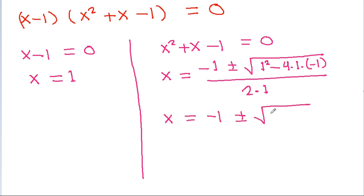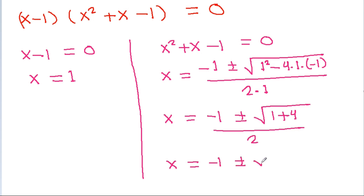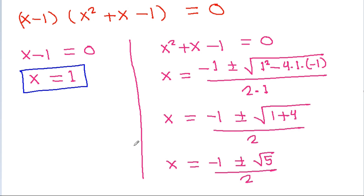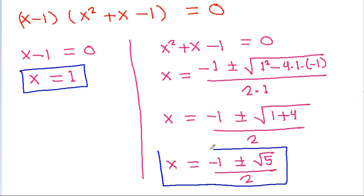From x minus 1 equals 0 we get x equals 1. From x squared plus x minus 1 equals 0, x is equal to minus 1 plus or minus square root of 5, all divided by 2. So the solutions are x equals 1 and x equals (minus 1 ± √5) / 2.